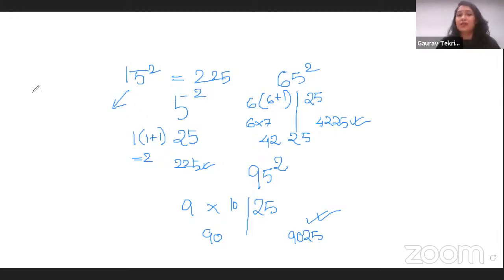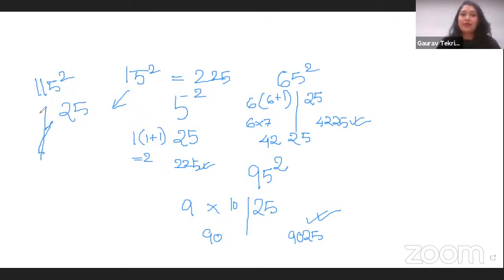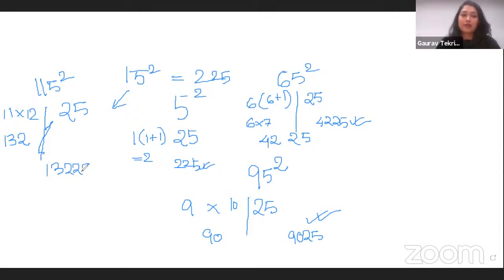Let's go above 100 this time. Let's take 115 squared. Here also we do the same thing. We do 11 into 12 which is 132. So 115 squared turns out to be 13225. This was our first method, in which we can take any number ending with 5 and square it pretty easily. Next, moving on to what we call the base method.